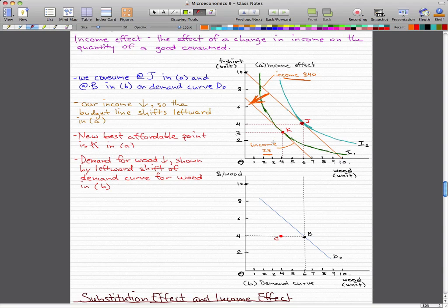So we'll just draw an arrow to show that shift. And our new best affordable point is now K in figure A. Now, again, what we'll do is draw a dotted line from figure A beyond to figure B. So here we have, we're buying four wood units and three t-shirts.